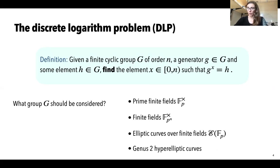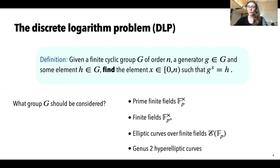This definition brings forth the discrete logarithm problem, where we are given a target element H in the group and asked to find the exponent X such that G to the X equals H. This problem is known to be hard, but it depends on the group G being considered. For cryptographic reasons, we want to choose a group G for which the discrete logarithm problem is as hard as possible. Groups often chosen in cryptography are prime finite fields, finite fields of the form FP^N, elliptic curves over finite fields, or genus-2 hyperelliptic curves. In this talk, we focus on the multiplicative group of finite fields of the form FP^N.